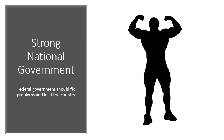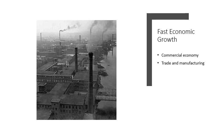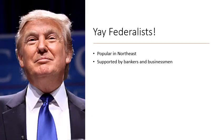The Federalist Party really believed in the idea of a strong national government. They thought the federal government should fix problems and lead the country. A huge aspect of the Federalist Party was fast economic growth — they believed the national government should promote a commercial economy, industrialization, trade, and manufacturing so the country could grow quickly. The Federalists were really supported in the Northeast, in areas like Philadelphia and New York, by bankers and businessmen who supported using the national government to promote economic growth.